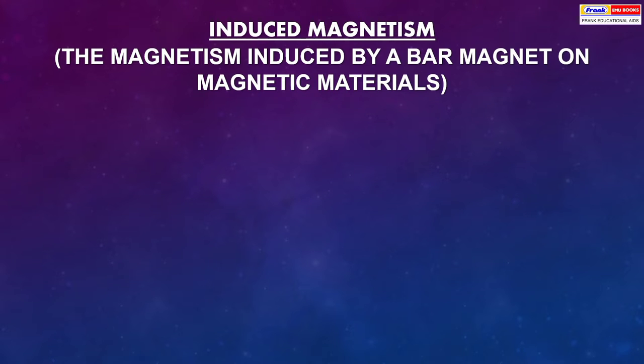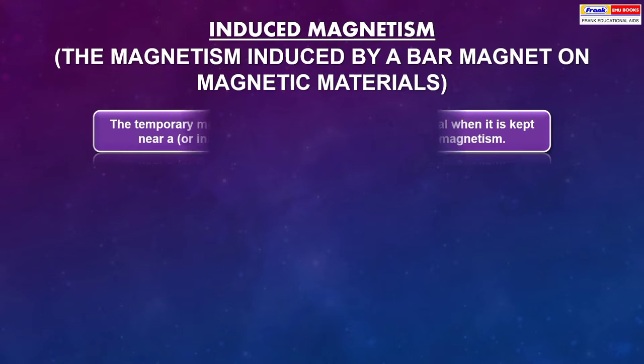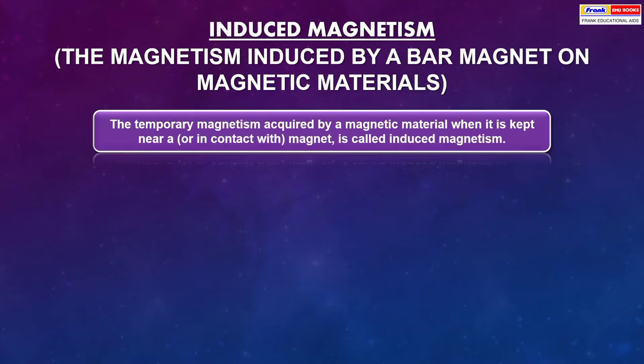The magnetism induced by a bar magnet on magnetic materials. The temporary magnetism acquired by a magnetic material when it is kept near or in contact with a magnet is called induced magnetism.